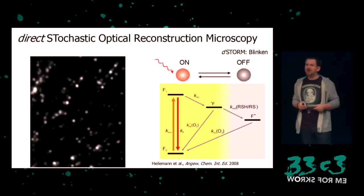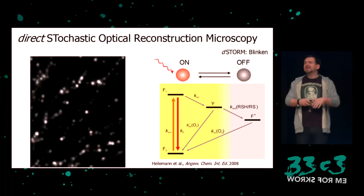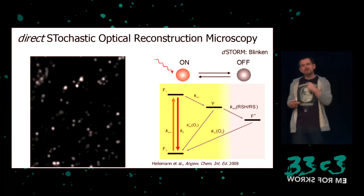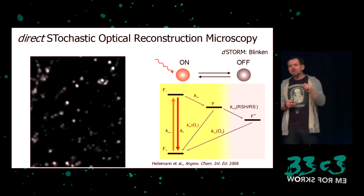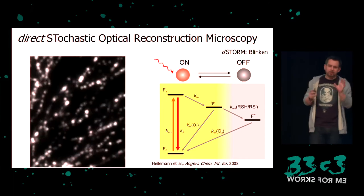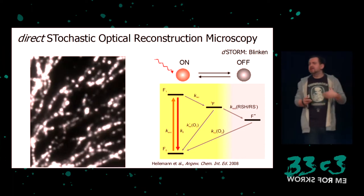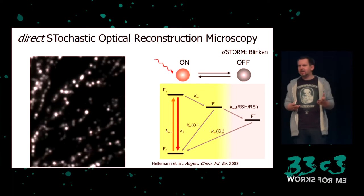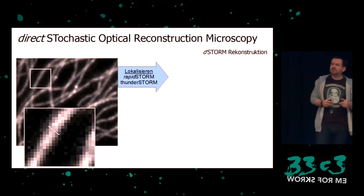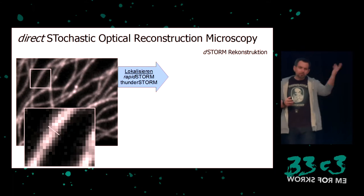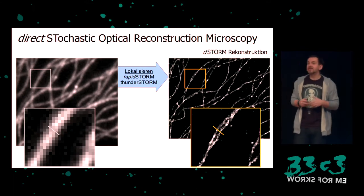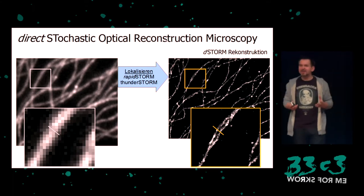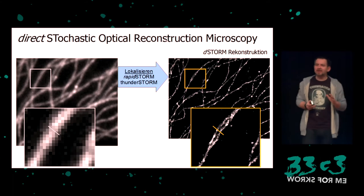In the beginning, you turn on the laser and then by and by they all turn off and then start flashing. These signals are really signals from the individual molecules — they are point-sized. If I record these signals — 10,000 or 20,000 pictures as raw data — then from such a blurred picture, we can get a high-resolution one, if you put it into the right software. It's called RapidStorm or ThunderStorm — very creative naming — and it's also free software.